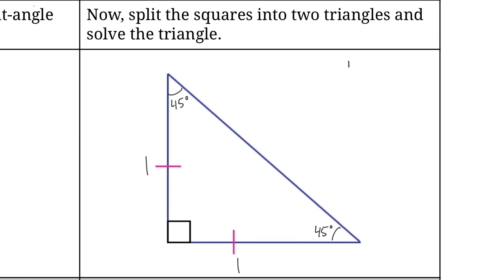So that's just 1 squared plus 1 squared equals c squared. And that would mean 2 equals c squared. We can just square root that to get c on its own. So c, our hypotenuse, is equal to the square root of 2. We're going to keep it that way because that's the exact answer — we don't want this as a decimal.